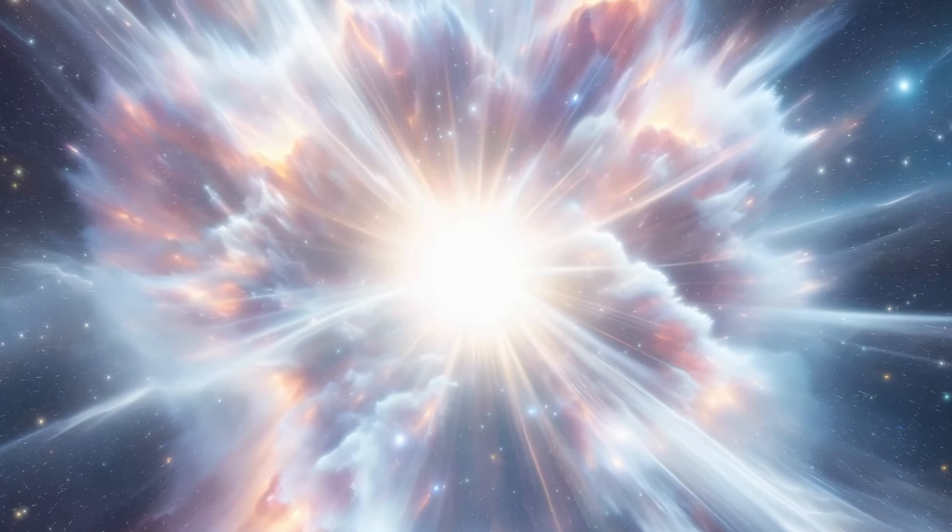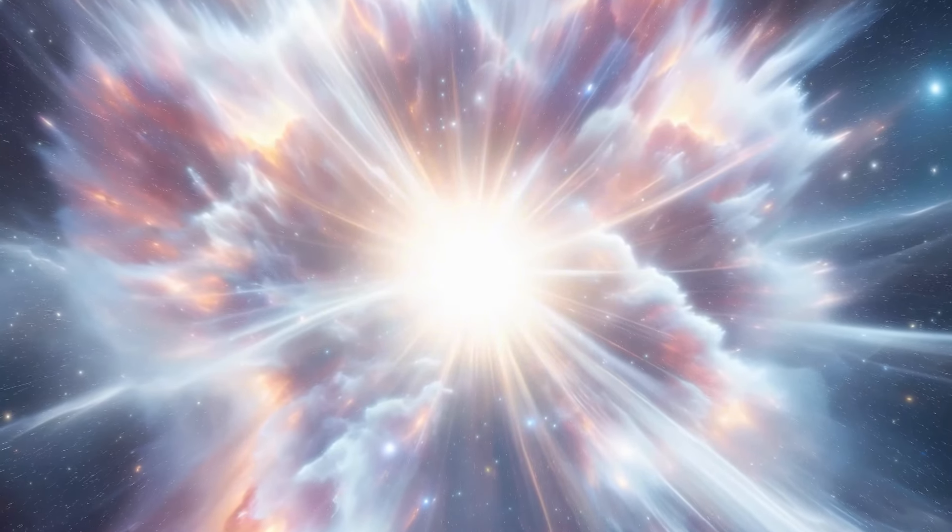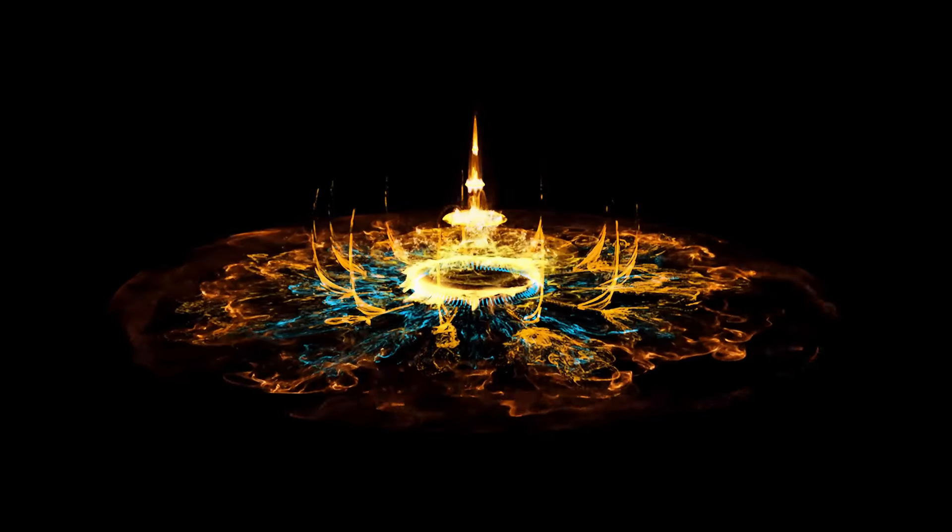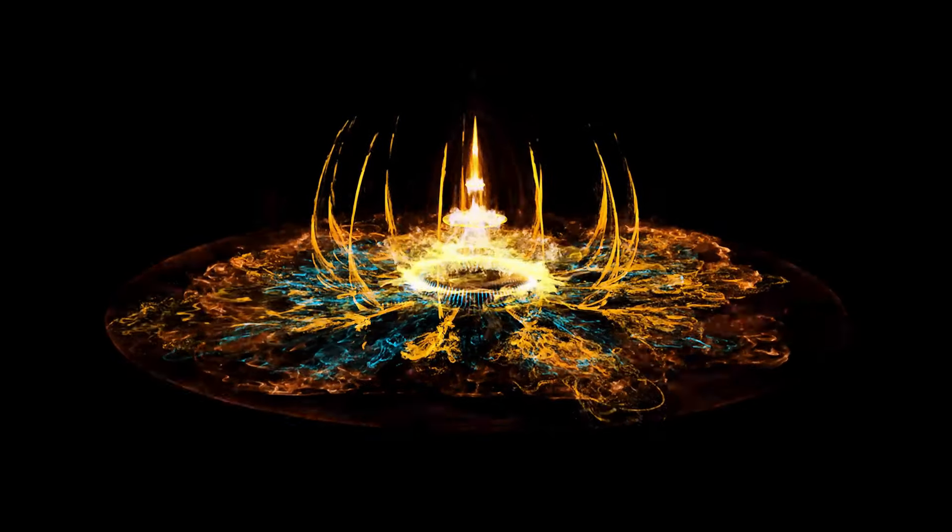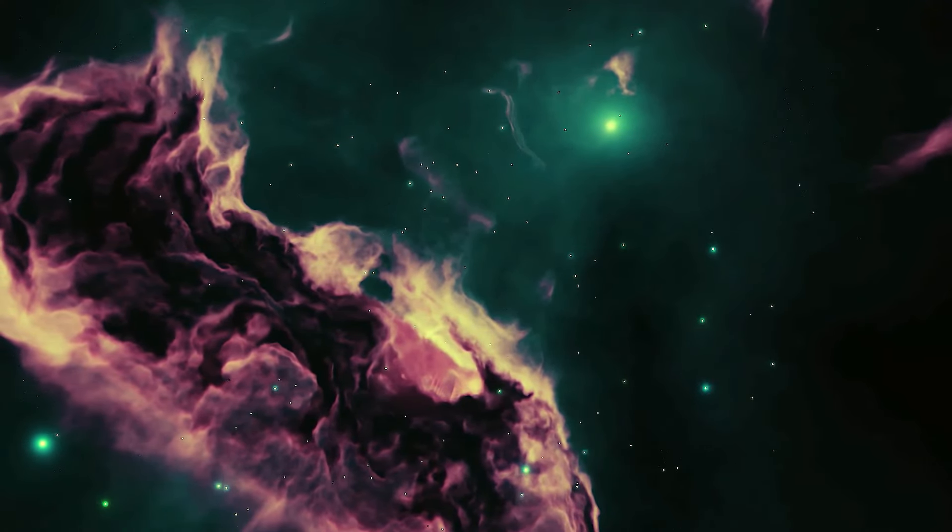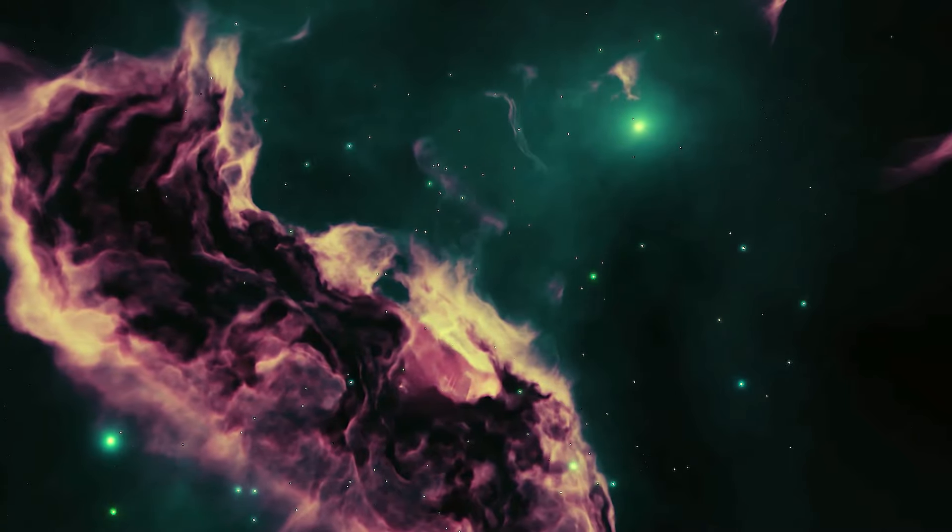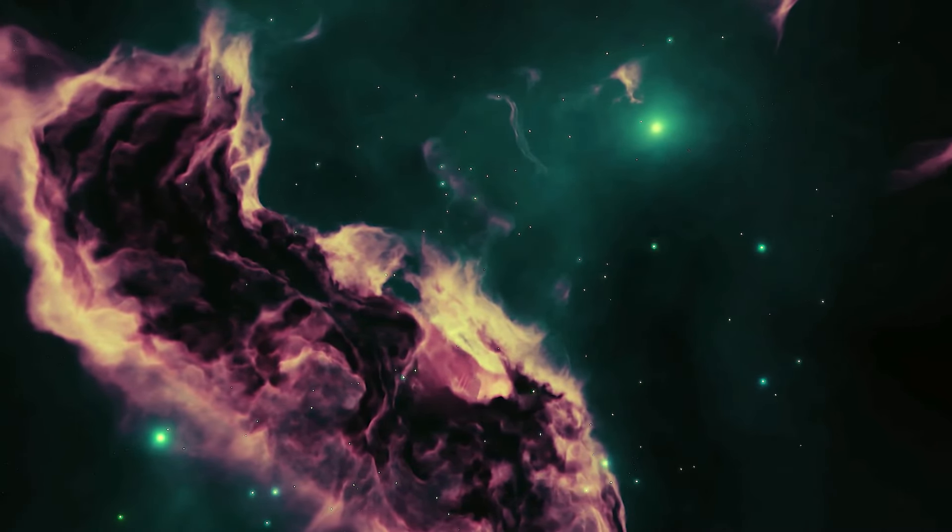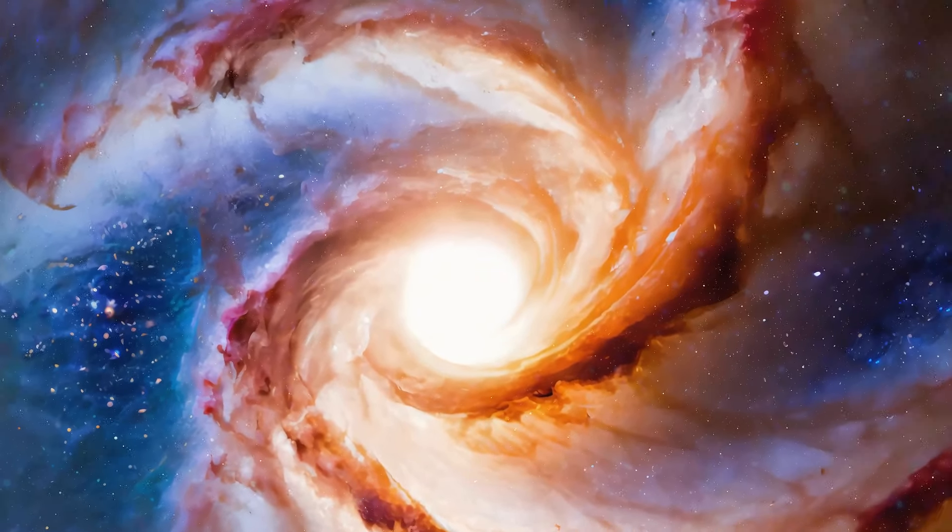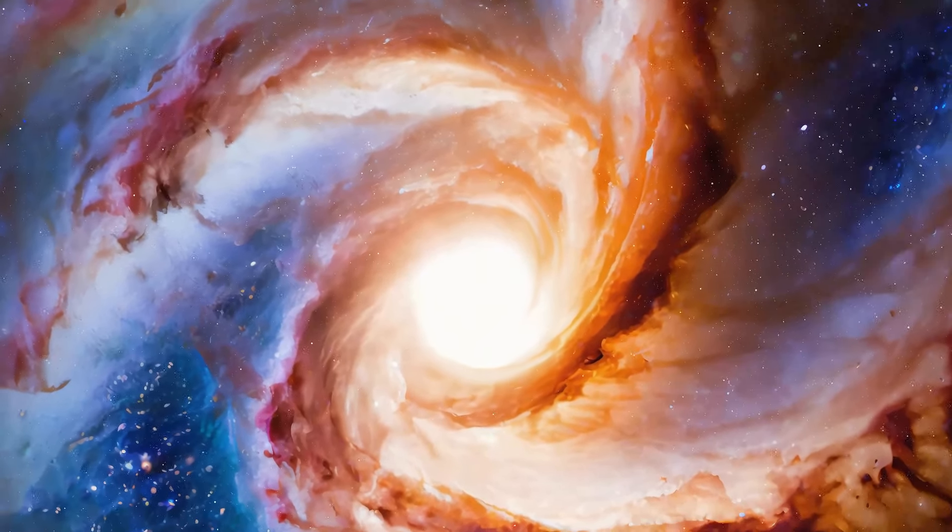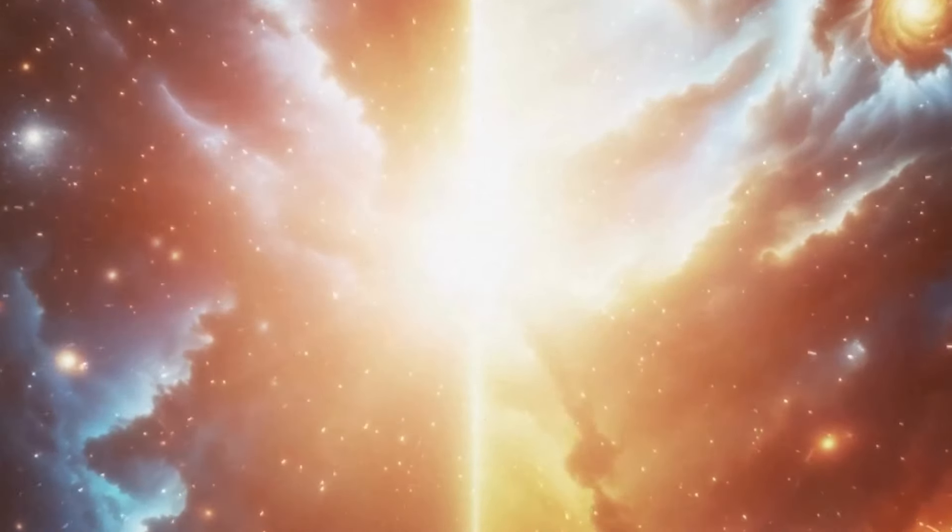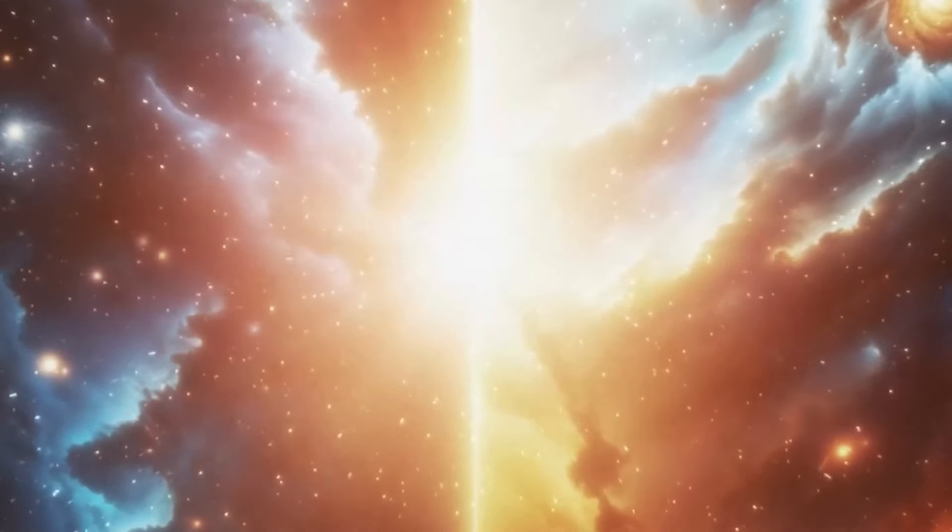Betelgeuse's looming or ongoing supernova event would mark a pivotal moment in this stellar life cycle. Researchers are especially interested in the processes that govern the transition from a massive star's final stages to its explosion. Current models suggest that as truly massive stars like Betelgeuse approach the end of their lives, they undergo a series of complex processes, including core collapse and the expulsion of outer layers. These stages are characterized by significant mass loss, which can affect the star's brightness and variability. By observing Betelgeuse's changes, scientists can gain insights into these processes and refine their models of stellar evolution.